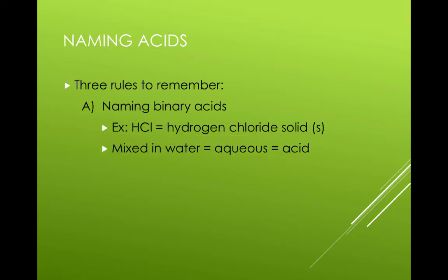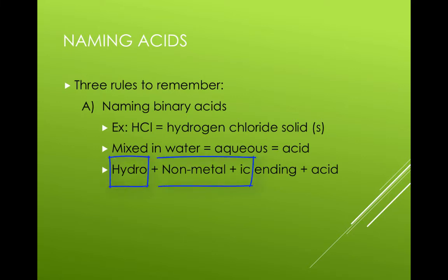When we mix the solid with water and it dissolves, it becomes an aqueous solution and is now referred to as an acid. The naming rule for binary acids is start with hydro, then the nonmetal, changing the ending to ick, adding acid at the end. So HCl is hydrochloric acid when mixed with water.